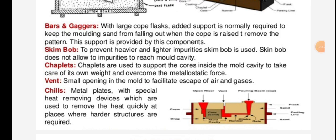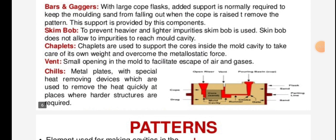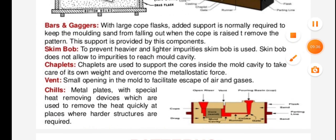Chaplets are used to support the cores inside the mold cavity, taking care of their own weight and overcoming the metallostatic force. Vents are small openings in the mold to facilitate escape of air and gases. Metal plates, also called chills, are special heat-removing devices used to remove heat quickly at places where harder structures are required. This is the introduction to casting.